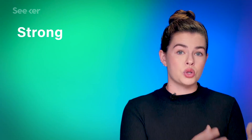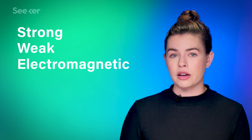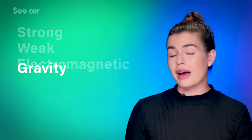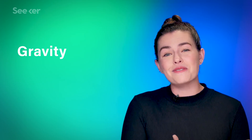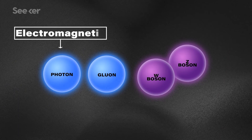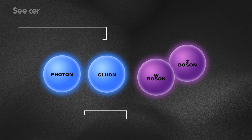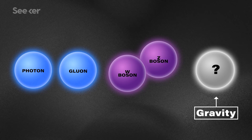The standard model works mathematically in most cases, but it only incorporates three of the four fundamental forces of our universe: the strong, the weak, and the electromagnetic forces — and then there's gravity. Gravity is the odd one out, the ugly duckling of the standard model, because it doesn't fit. Each of the other three forces has a carrier particle. Photons carry the electromagnetic force, gluons carry the strong force, and W and Z bosons carry the weak force. But we haven't discovered a carrier particle for gravity, which we would call the graviton, if we could find it.